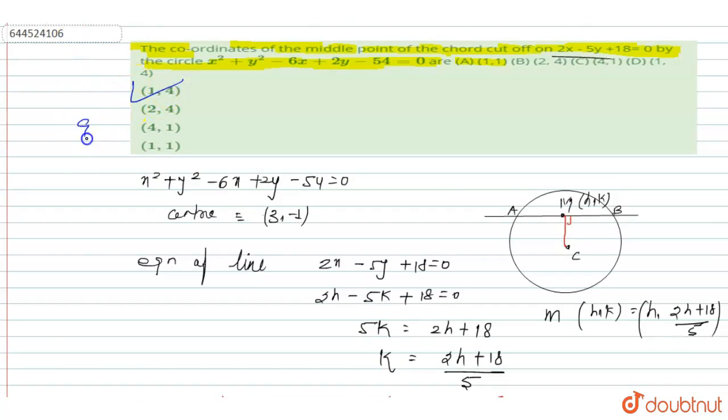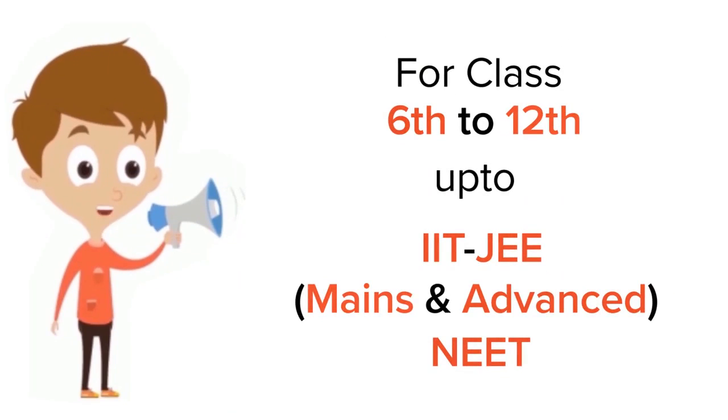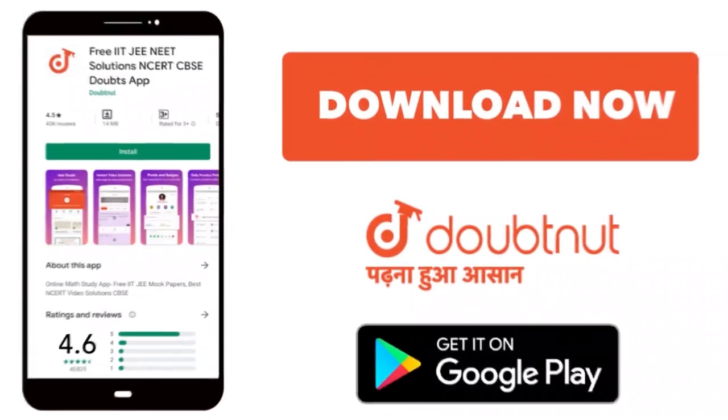When we see the option of this question, then option 1, 4, option A is the right answer of this question. Thank you. For class 6-12 IIT and NEET level, trusted by more than 5 crore students, download Doubtnut app today.